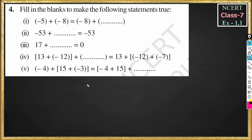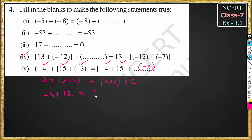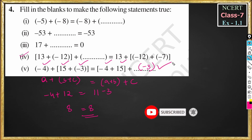Question 5: minus 4 plus 15 plus minus 3 is equal to minus 4 plus 15 plus dash. This is the same as question 4, in the form a plus b plus c equals a plus b plus c, the associative property. Here a is minus 4, b is 15, and c is minus 3. Calculating: minus 4 plus 15 minus 3 equals 8, and minus 4 plus 15 is 11, plus minus 3 is also 8. Hence minus 3 is the correct answer.